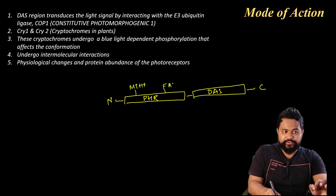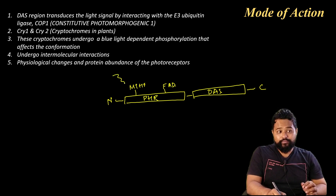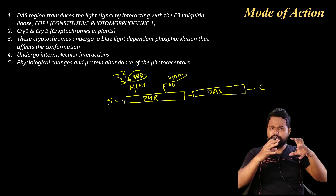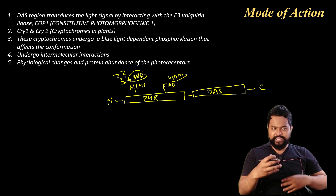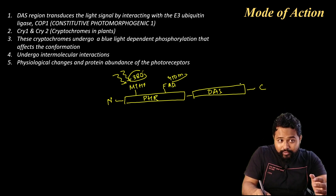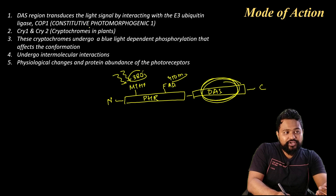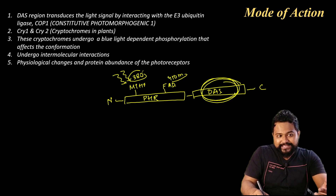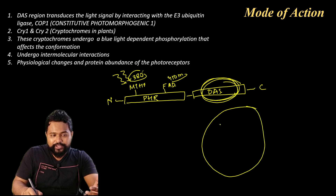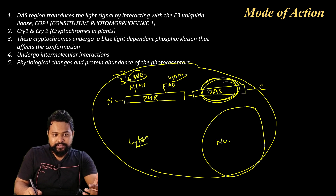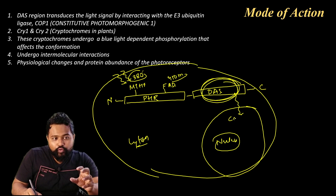In the mode of action: cryptochrome contains a FAD region. Blue light in the range of 380 to 450 nanometers is absorbed, causing a conformational change in the chemical structure. The signal is then transduced from the cytosol to the nucleus. In the nucleus, COP1, a ubiquitin ligase, plays a key role in this signaling pathway.